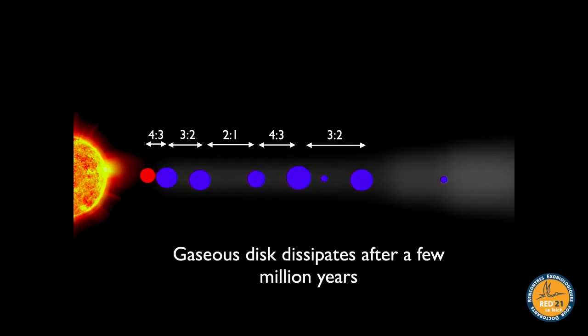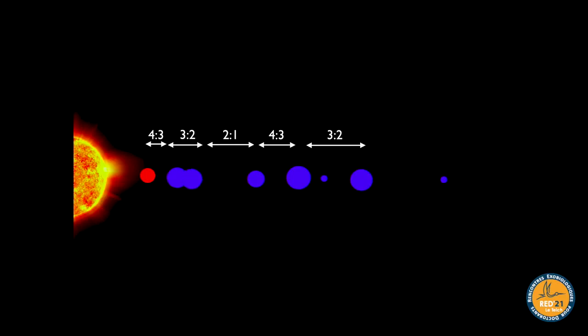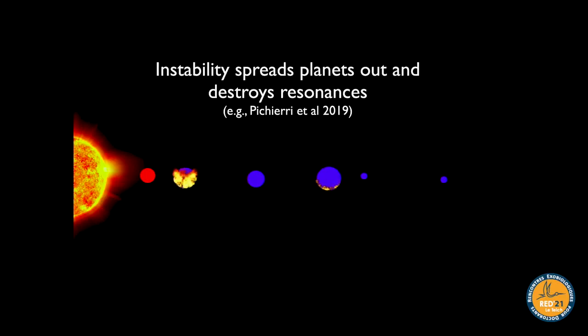I like to describe the gas disk as a teacher that keeps the kids in line. At recess, a strict teacher keeps kids from doing anything too stupid. As soon as the teacher leaves, the kids go crazy. It's the same with resonant chains: the planets are the kids, and the gas is the teacher.